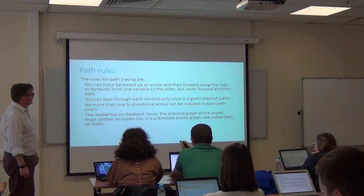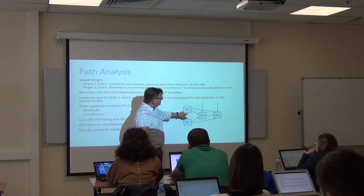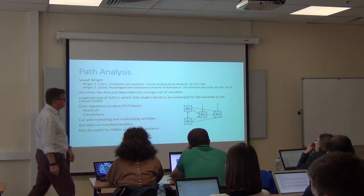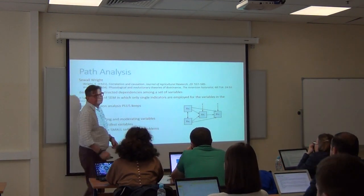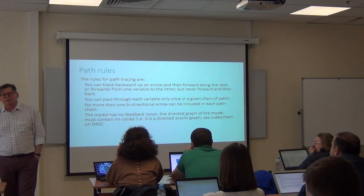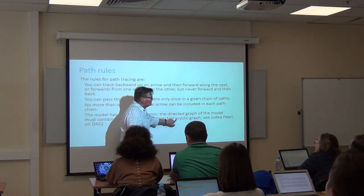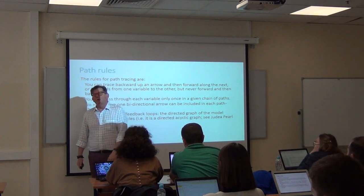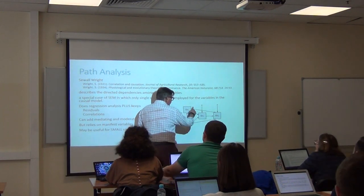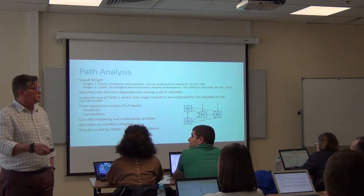No more than one bidirectional arrow can be included in each path chain — a bidirectional arrow is a correlation. You can't suddenly have another correlation somewhere else. The model has no feedback loops, nothing that brings it back. The directed graph must contain no cycles. This is what Judea Pearl calls a directed acyclic graph: directed because it has direction, and acyclic — 'a' as a prefix meaning no — meaning no cycles inside the model, nothing going around and around in a loop. That way lies madness; it's no longer a valid structural equation model.